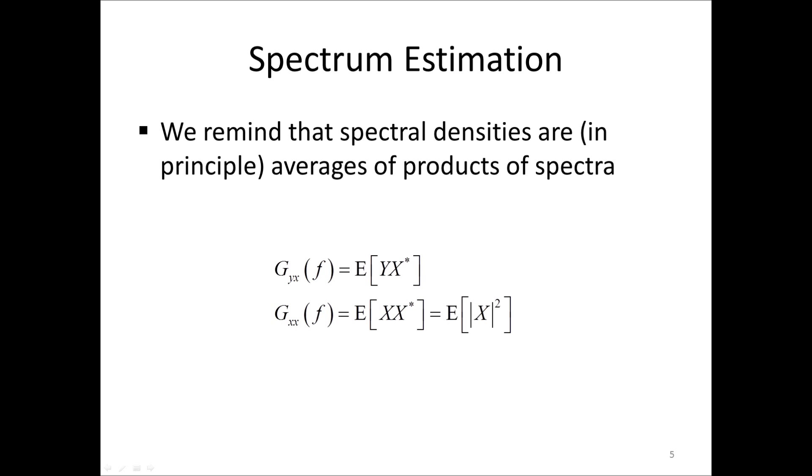To understand the estimator, first we remind that the cross-spectral density GYX, except for scaling, is the expected value, or average, of the Fourier transforms Y and the complex conjugate of X. The autospectral density GXX is similarly the expected value of X times X complex conjugate, or simply the expected value of the magnitude of X squared.